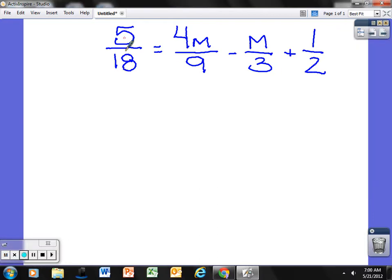So we have a new equation here. We have 5/18 equals 4m over 9 minus m over 3 plus one half. Now what we want to do is obviously solve this equation and evaluate for m.